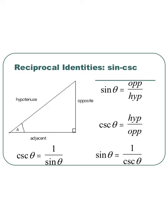We're going to start off with our reciprocal identities. We talked about the fact that the sine and the cosecant are reciprocals. Looking at a right triangle with angle A at the bottom left, the sine is the opposite side over the hypotenuse, and since the cosecant is the reciprocal, it's going to be the hypotenuse over the opposite. This leads us to our two reciprocal properties: the cosecant equals 1 over the sine, and the sine equals 1 over the cosecant. We'll use this to rewrite expressions to simplify things as we walk through some trig proofs.